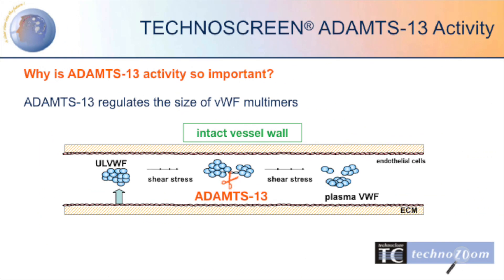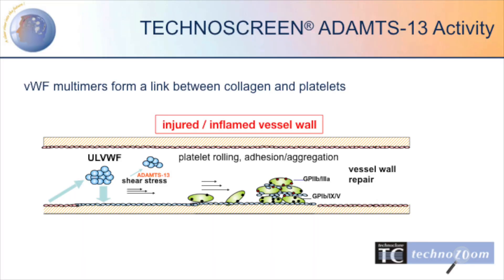ADAMTS13 is an enzyme that regulates the size of von Willebrand factor multimers. When an injured or inflamed vessel wall is present, von Willebrand factor multimers form a link between collagen and platelets.